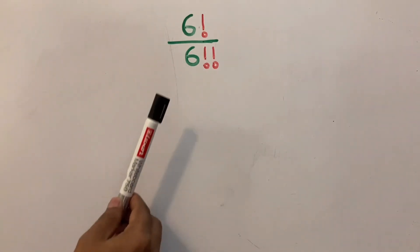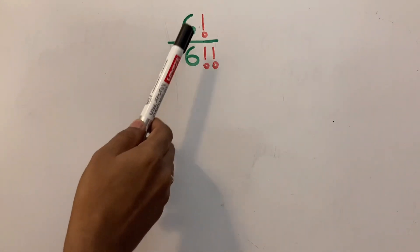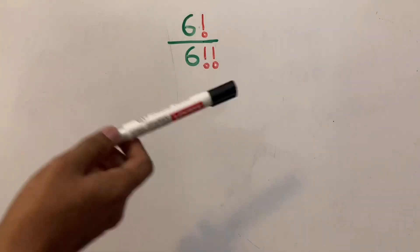This is the typical factorial question where we have to find the value of 6 factorial divided by 6 double factorial.